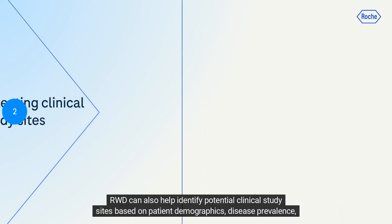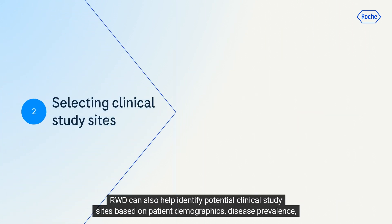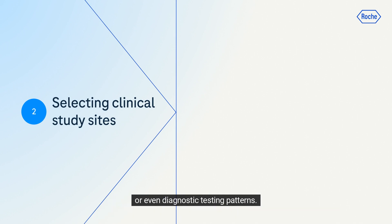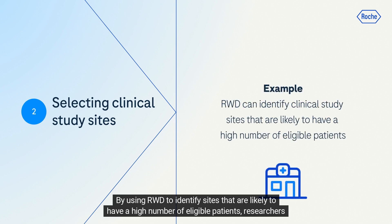RWD can also help identify potential clinical study sites based on patient demographics, disease prevalence, or diagnostic testing patterns. By using RWD to identify sites that are likely to have a high number of eligible patients, researchers can improve the efficiency of clinical studies and reduce the time it takes to bring new IVDs to market.